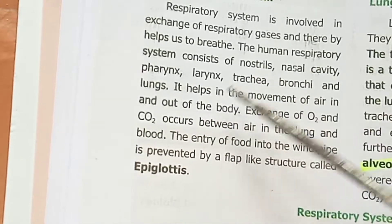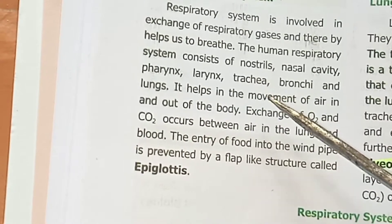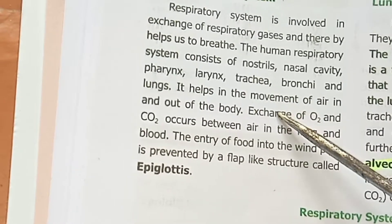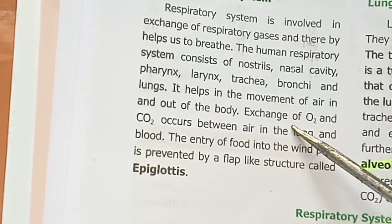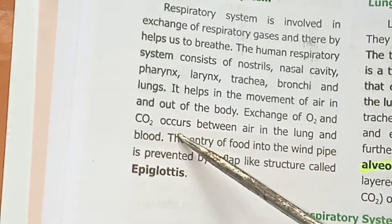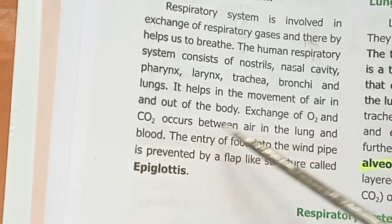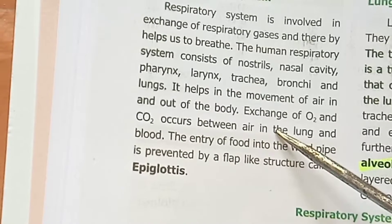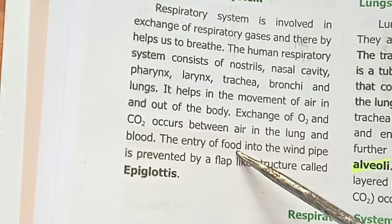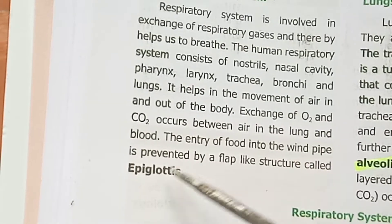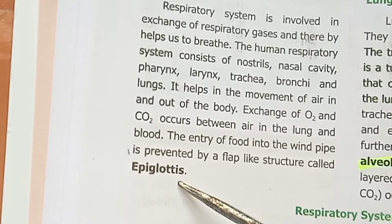The nasal cavity is the first structure through which air passes. The exchange of oxygen and carbon dioxide occurs between the air in the lungs and the blood. The entry of food into the windpipe is prevented by a flap-like structure called the epiglottis.